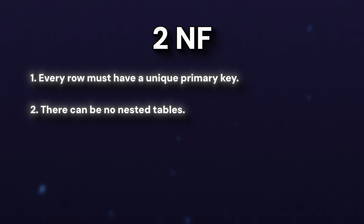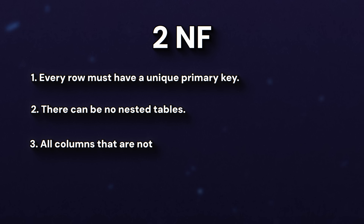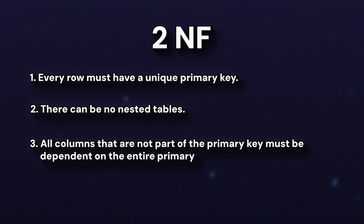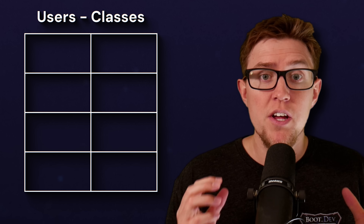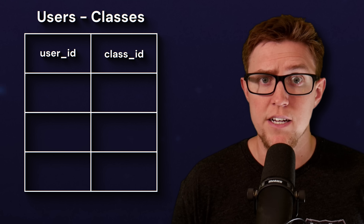Now on to second normal form. We still have to follow all the rules of first normal form, but there is one additional rule: all columns that are not part of the primary key must be dependent on the entire primary key, not just part of it. A primary key is usually a single ID column, but you can have a table with a primary key that's a unique combination of two or three or more columns. For example, you might have a users_classes table with a user ID column and a class ID column.